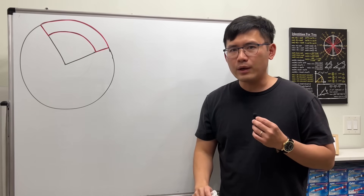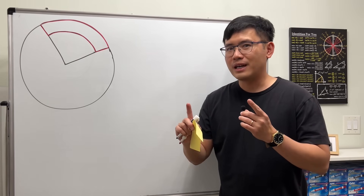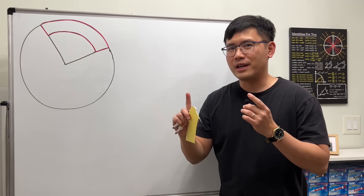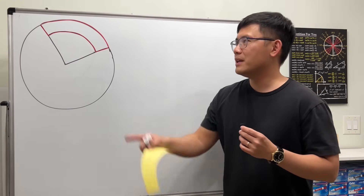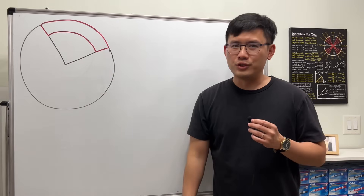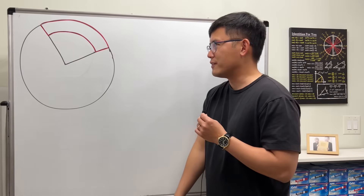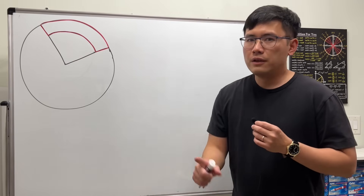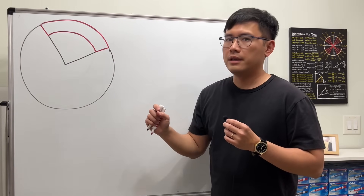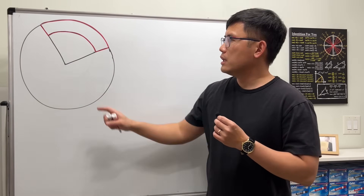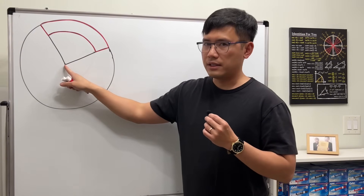Once we get into Calculus 3 and talk about how to change from a rectangular coordinate system to the polar system, this will show up again. So we're going to see how to derive a formula. This shape comes from a circle — it's just a sector.